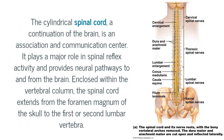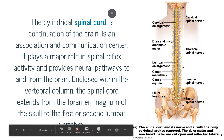The cylindrical spinal cord, a continuation of the brain, is an association and communication center. It plays a major role in spinal reflex activity and provides neural pathways to and from the brain. Enclosed within the vertebral column, the spinal cord extends from the foramen magnum of the skull to the first or second lumbar vertebra. The foramen means it's a hole — basically the hole in the back of our head where our spinal cord attaches to our brain.